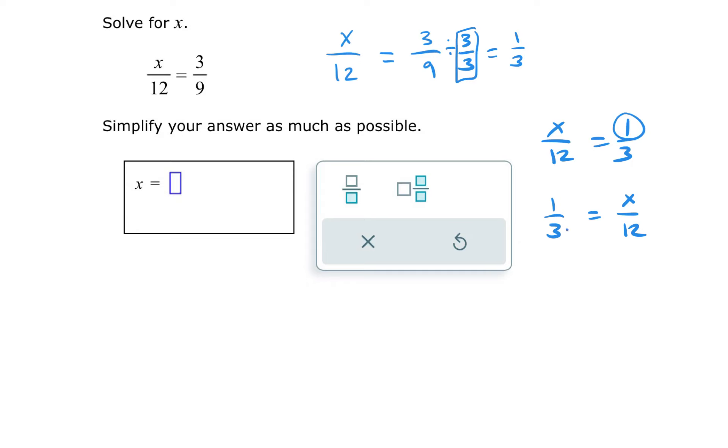So what did I do to 3 to get to 12? I multiply by 4. I'm going to do the same thing on the left. 1 times 4 is 4.